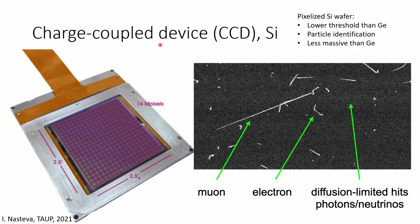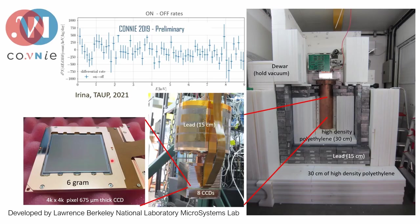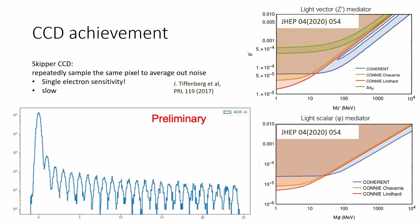The second ionization detector I'd like to mention is the CCD — charge-coupled device — which is basically a pixelized silicon wafer. It offers much lower energy threshold than germanium, and also the capacity to do particle identification based on the shapes of particle trajectories. Since it is made of silicon, it is very hard to make as large as germanium detectors. Eight thick CCDs are used in the CONNIE experiment, which published their energy spectrum in 2019 — they are also very close to observing CEvNS. Based on the observed data, they can set constraints on low-mass dark matter parameters. An interesting technology they are developing can repeatedly sample the same pixel to average out noise, allowing single-electron detection, though this makes the detector very slow.